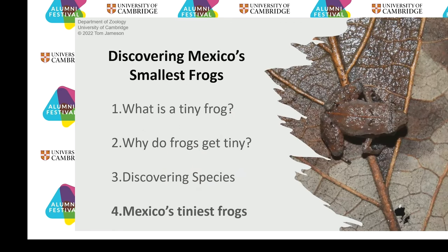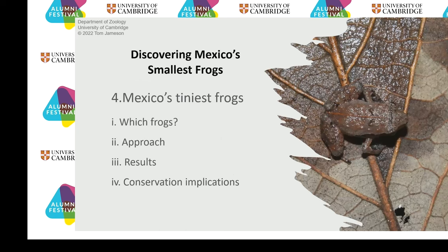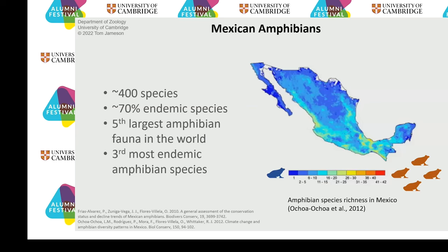Now let's get into the work we did here at Cambridge in the University Museum of Zoology, where we discovered Mexico's smallest frogs. Mexico is a really important place for amphibians — we have almost 400 species of amphibians from Mexico, meaning Mexico has the fifth largest amphibian fauna of any country in the world. Almost 70% of those species are endemic, meaning they're not found anywhere else in the world. Mexico has the third most endemic amphibian species in the world.